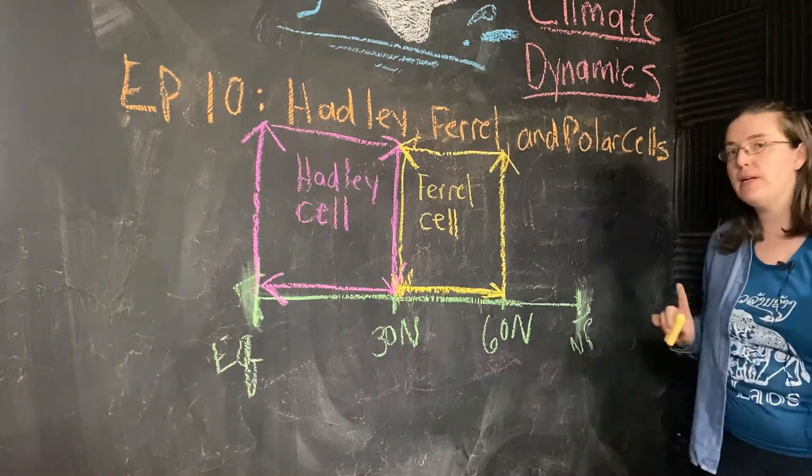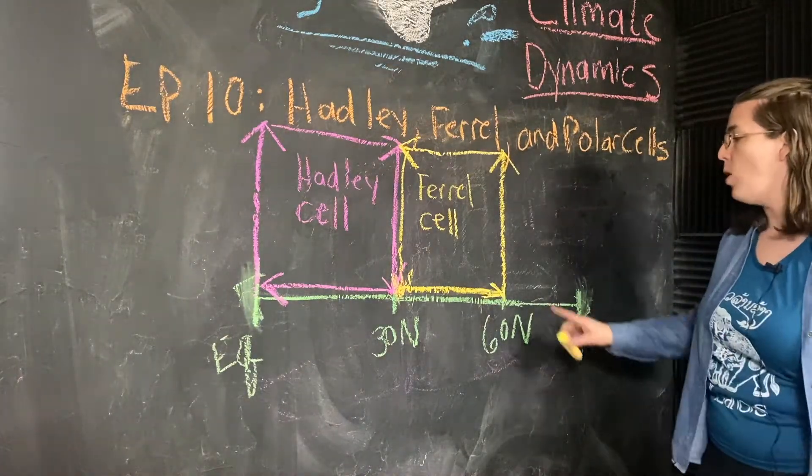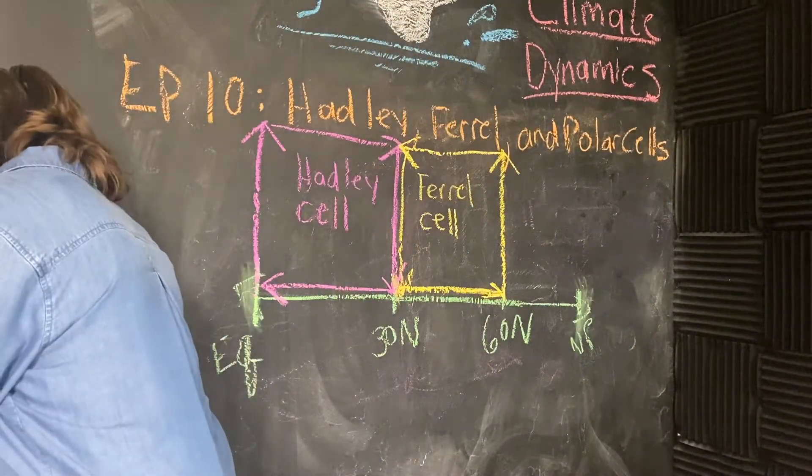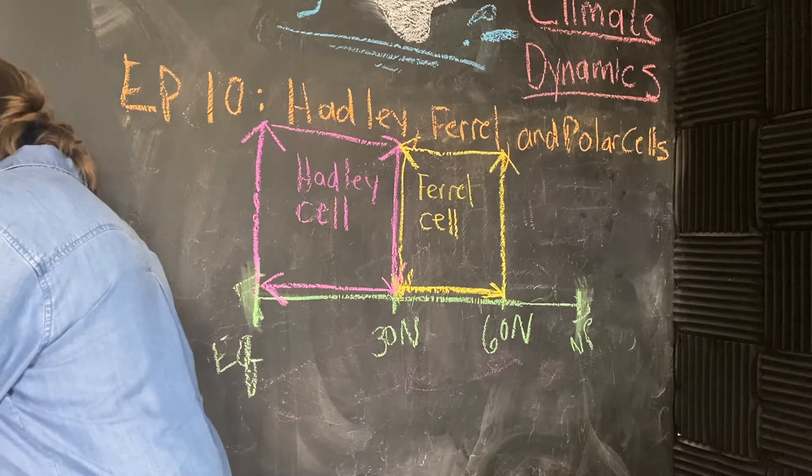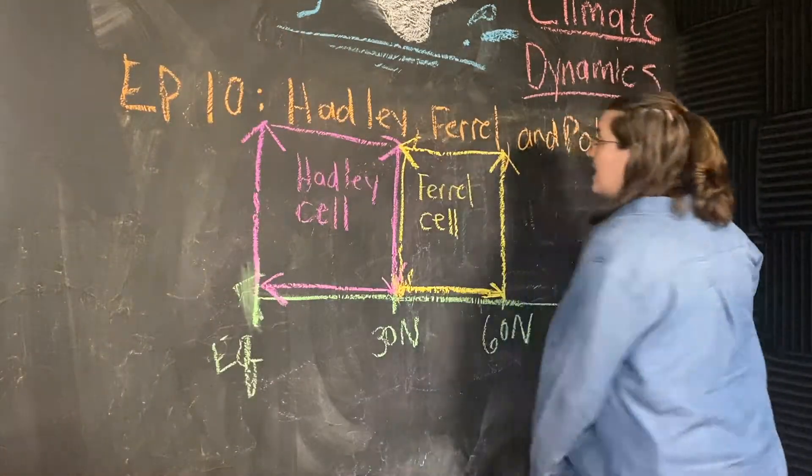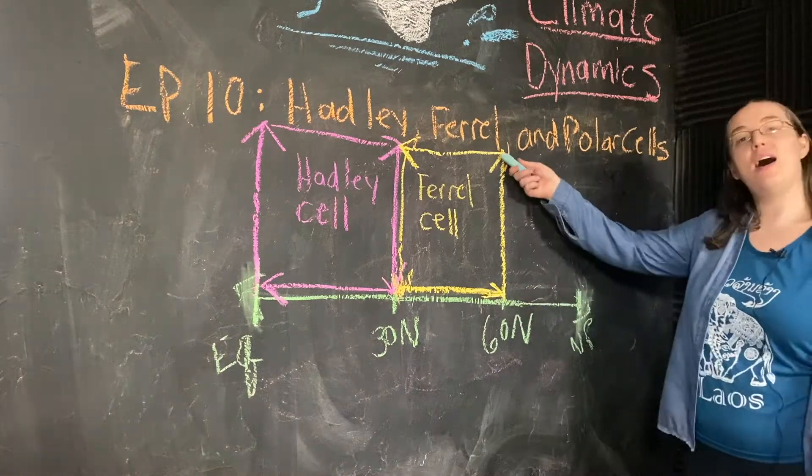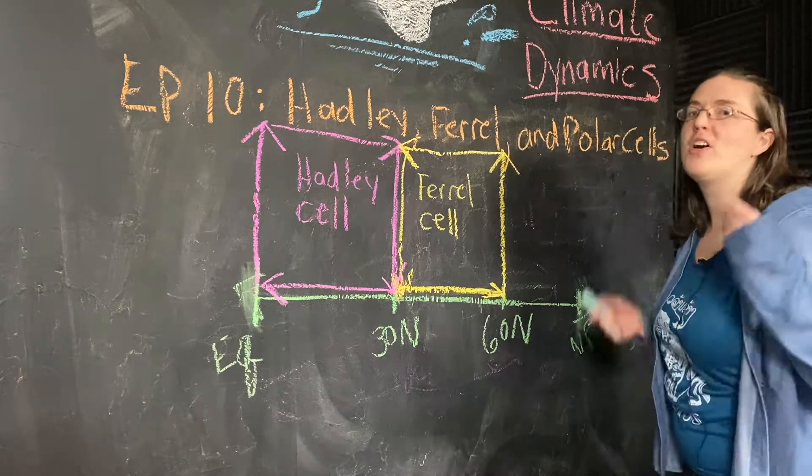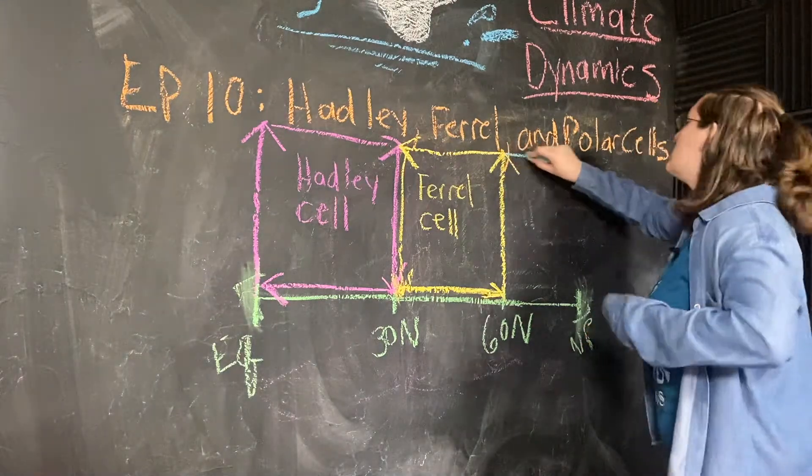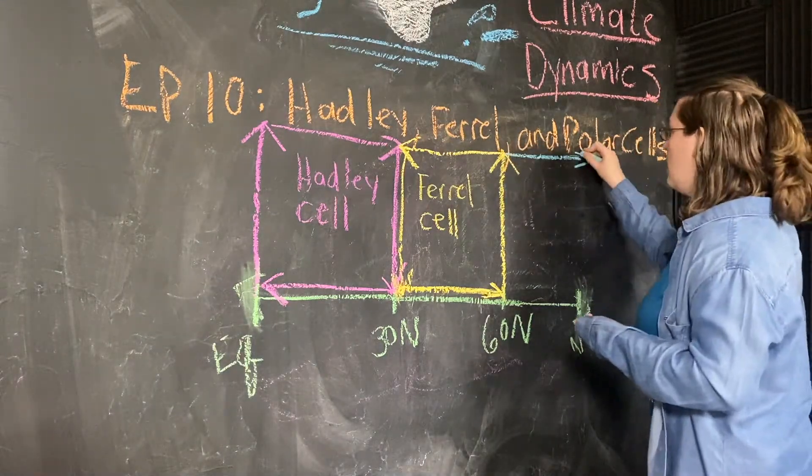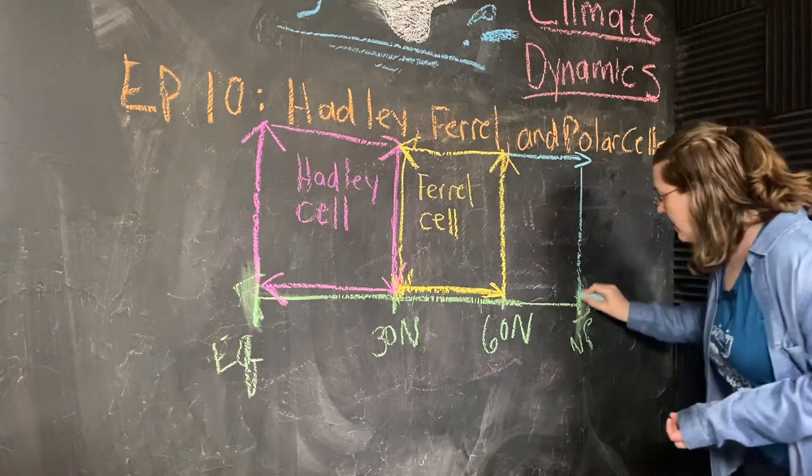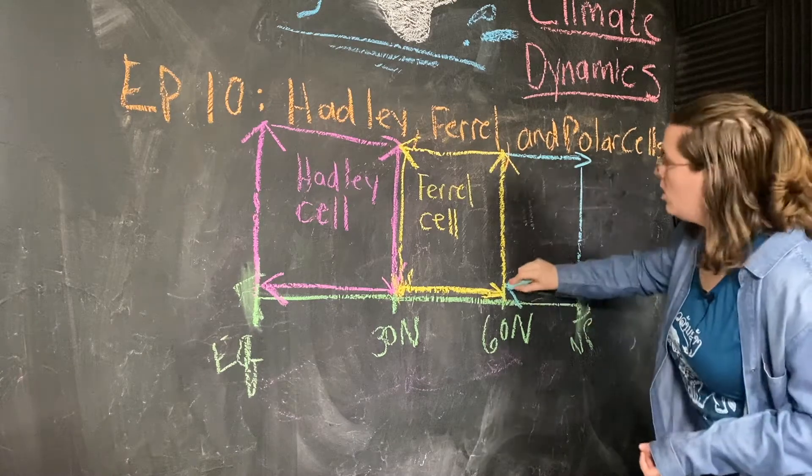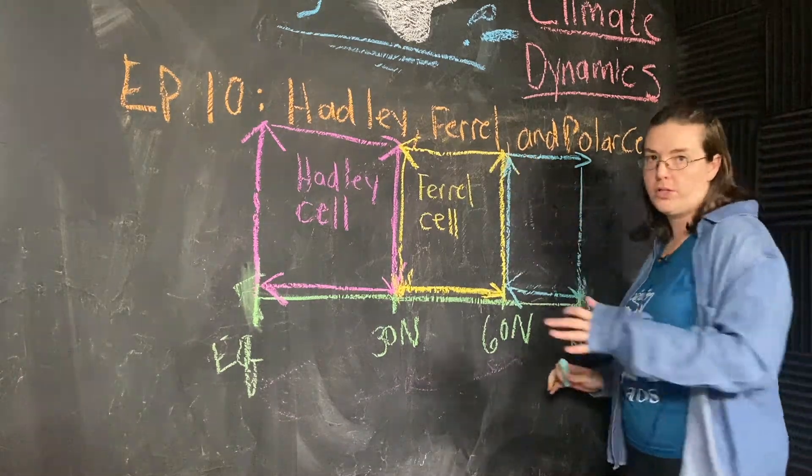And last but not least is going to be the polar cell. Same thing - as this air is going up, it's not only going to go to the south, not only going to go equatorward. There's no reason why some of it can't come back up north. We would sink and then return back here, rising air. That way, here is our polar cell.